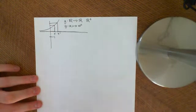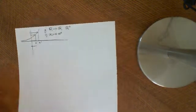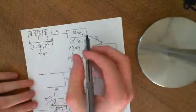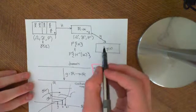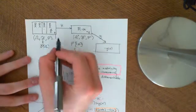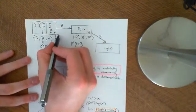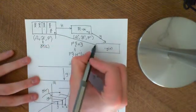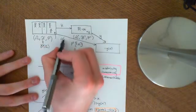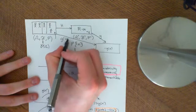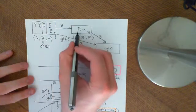Let me now define what a transformation of a random variable is. Here is a transformation of a random variable where you are creating a new random variable, which we could call g of the random variable H.